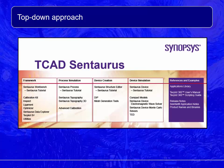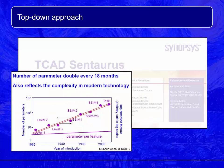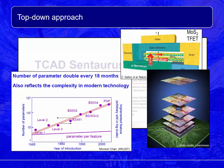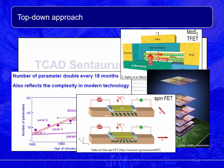One way to simulate nano-electronic devices is to improve existing device models by including more and more parameters. This is called the top-down approach. Currently, this approach is the workhorse of industrial TCAD tools. However, as the device shrinks in size, the number of parameters grows rapidly, making the top-down approach more and more sophisticated and challenging. Most importantly, to continue Moore's Law, electronic engineers are exploring new electronic materials, new device architectures, and new operating mechanisms. These efforts are beyond the scope of well-established device models. Hence, significant changes are necessary to the top-down approach.